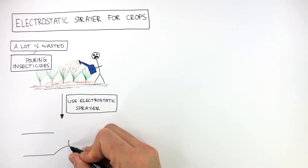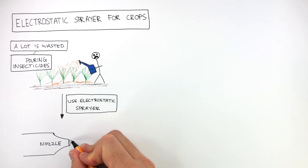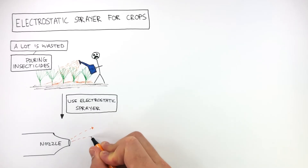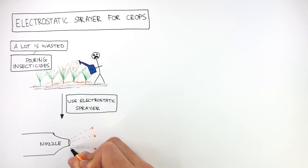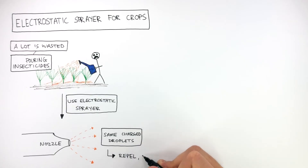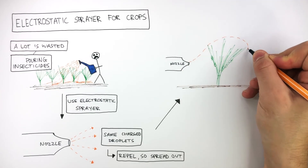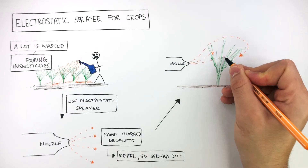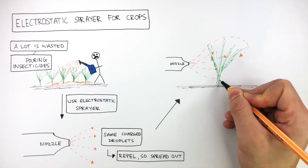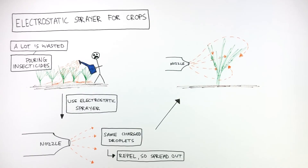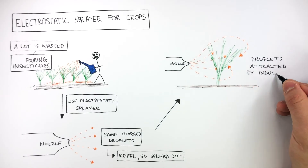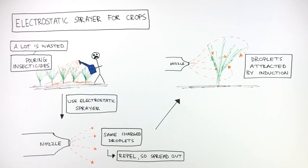This diagram represents the nozzle of an electrostatic sprayer. The orange lines represent the droplets of insecticides which have been made to have the same charge by the nozzle. Because they have the same charge, these droplets repel each other, helping them spread out evenly around and underneath the plant. The droplets are attracted to the crops by induction.